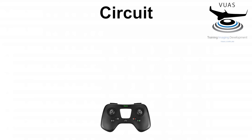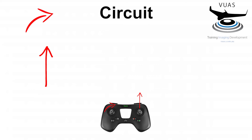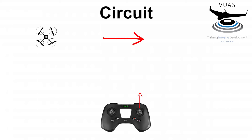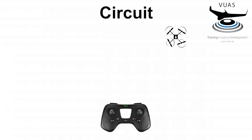Our final maneuver is the circuit, the most difficult maneuver as we'll be changing the orientation of the aircraft so it's no longer in line with ourselves. As with the sliding square we start with our right thumb pitching forward, but before we come to the corner we start inputting some yaw with our left thumb — in this case yaw right. So as we continue to pitch forward we yaw right and do a 90-degree turn. We are now facing 90 degrees from ourselves, so if we continue to pitch forward we'll actually move from left to right.